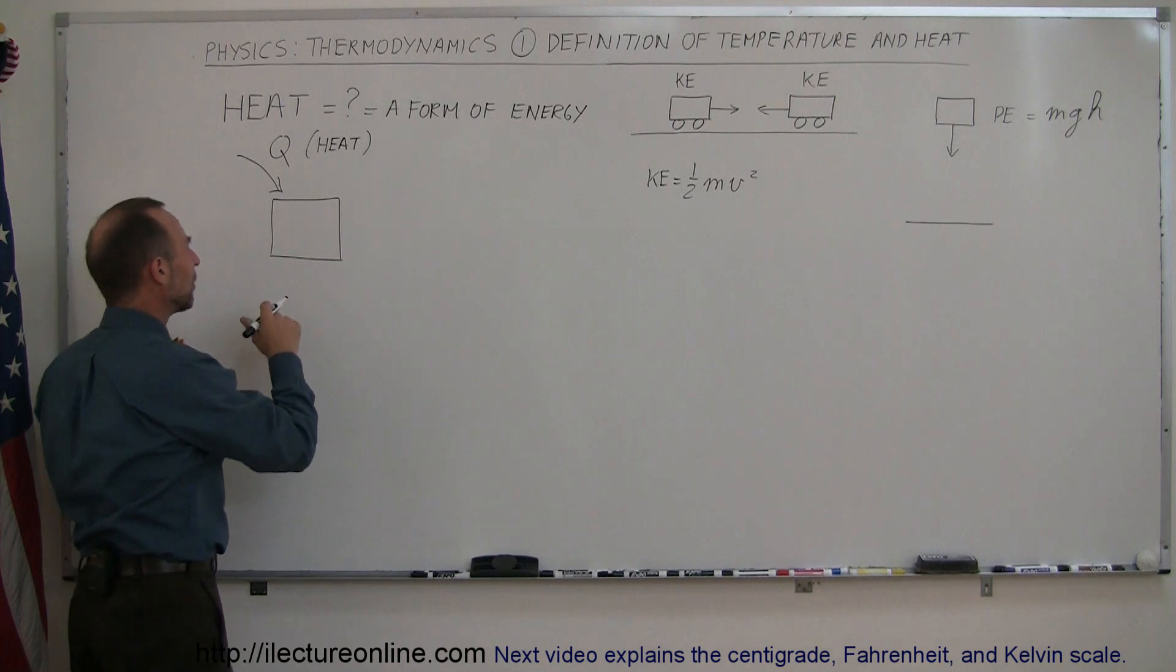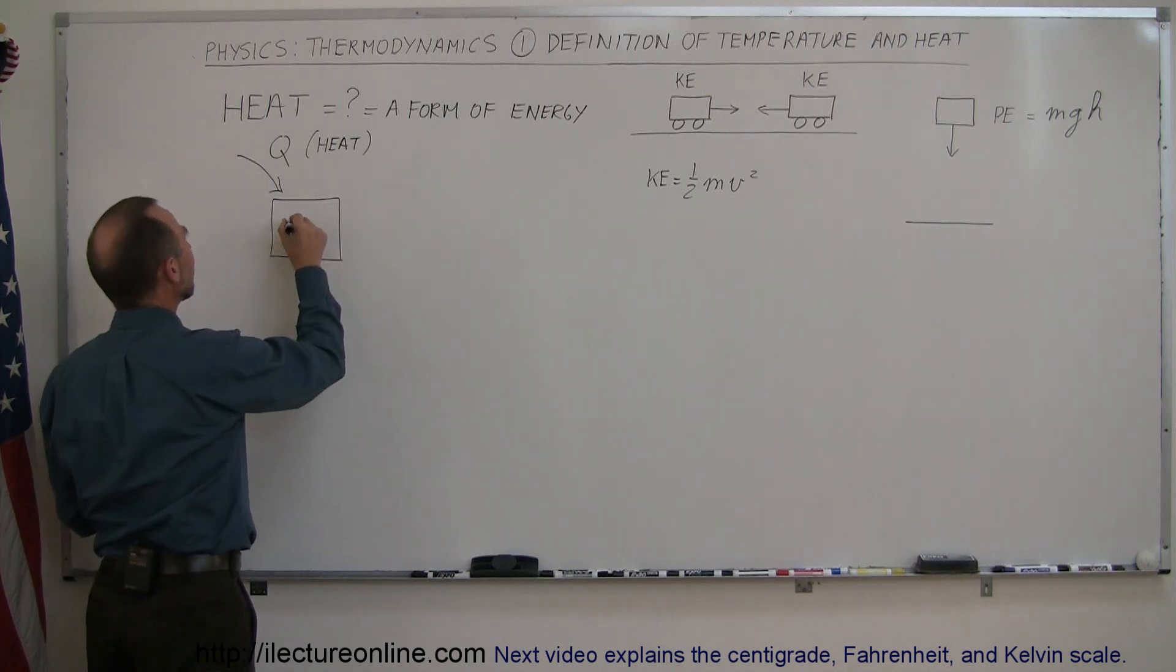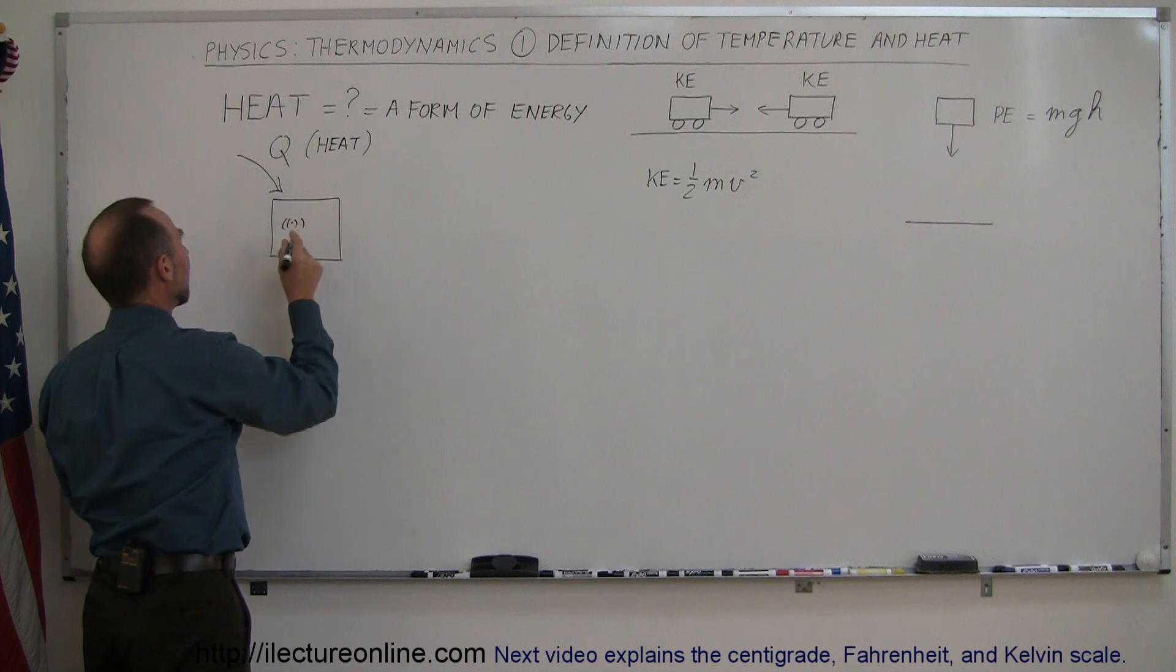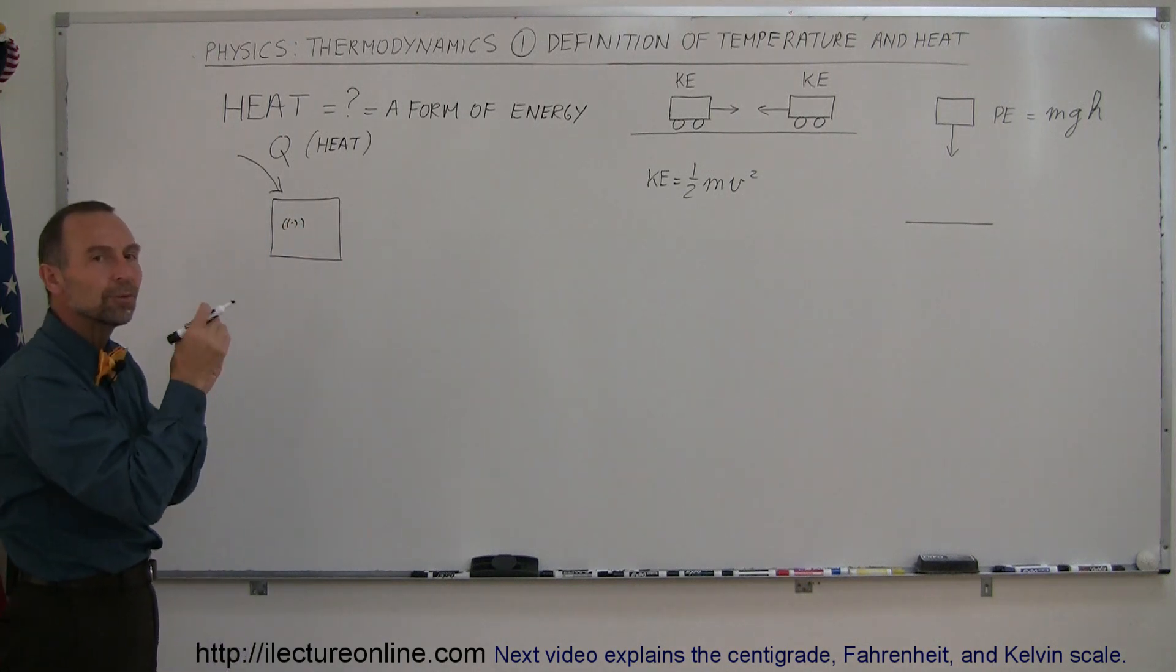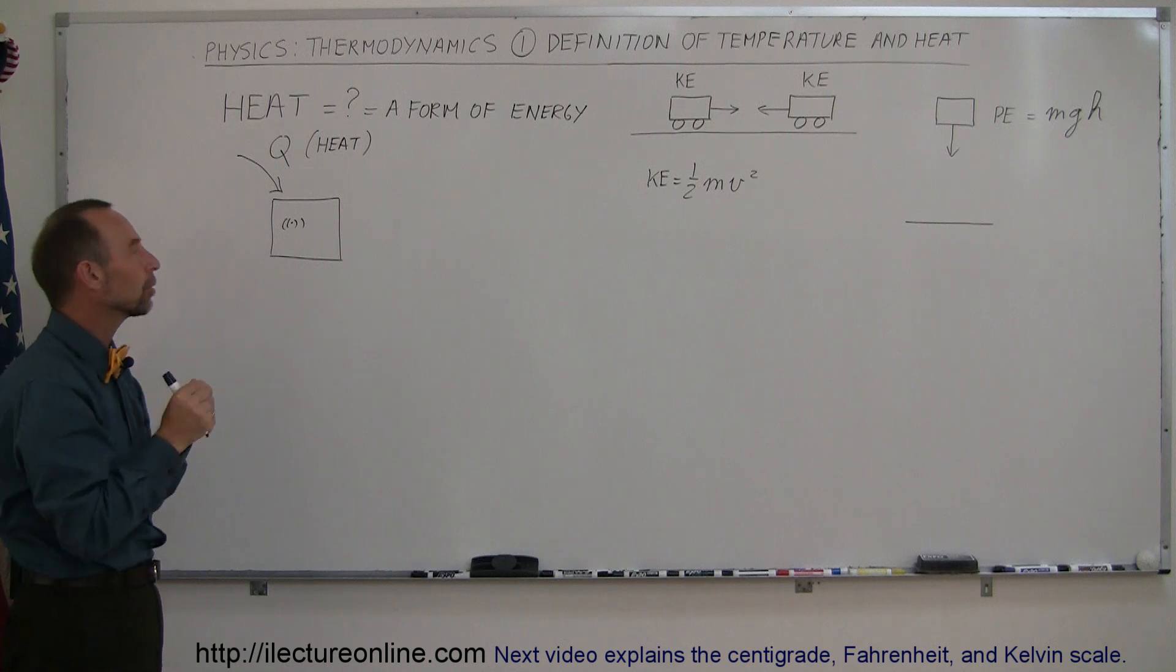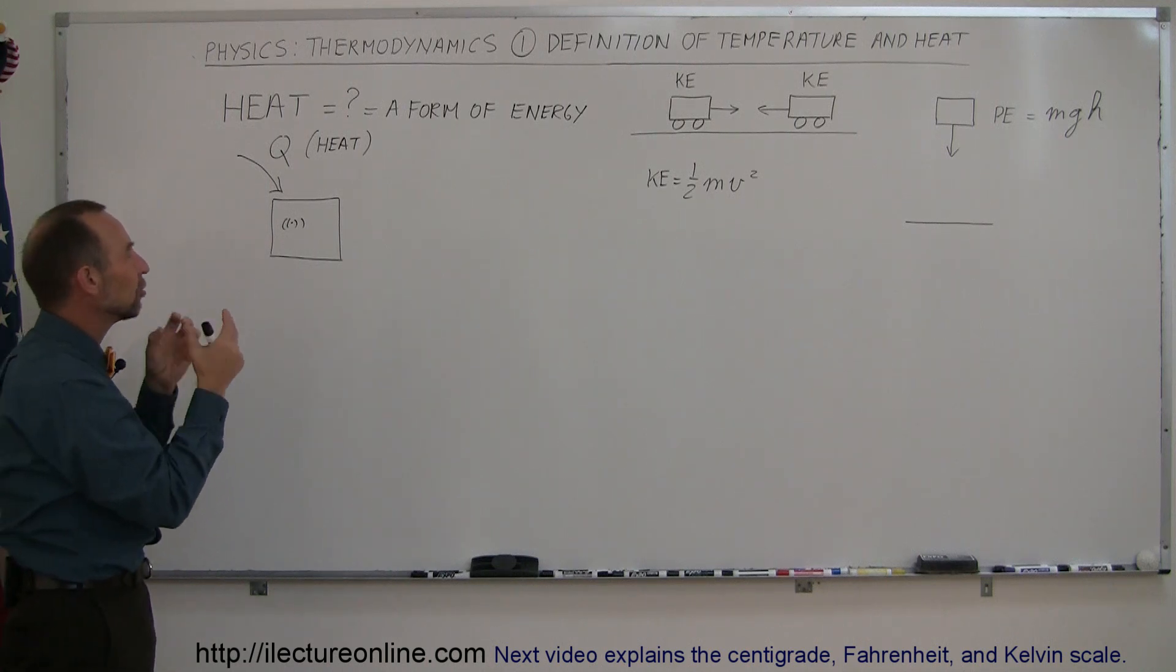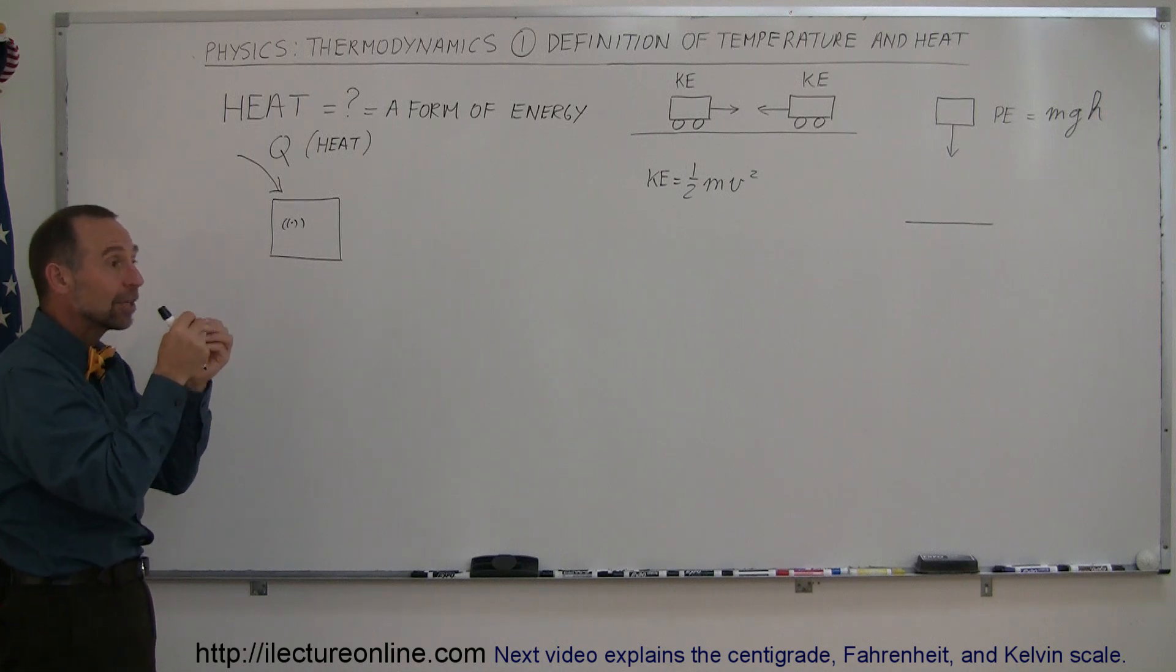And when we put heat into an object, what happens then is we cause the atoms and the molecules in the object to vibrate. And when they vibrate back and forward, they have kind of like movement energy. They have kinetic energy. So heat is actually energy put into an object causing the atoms and the molecules to vibrate. So it's kind of storing or locking up heat or energy in the object by having the object vibrate.